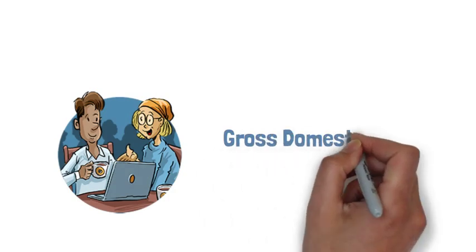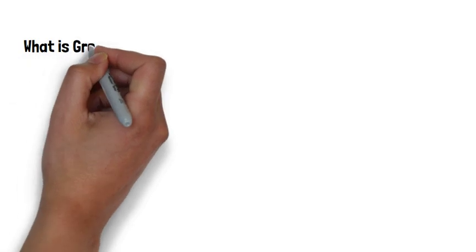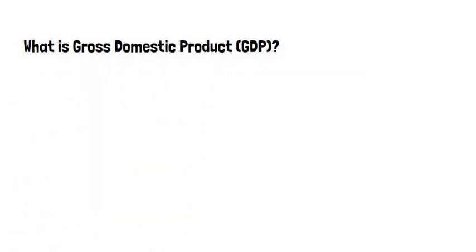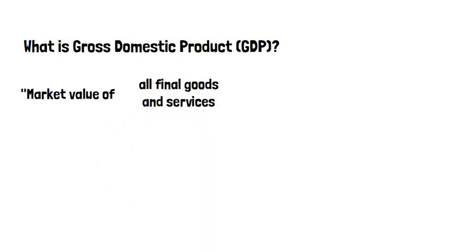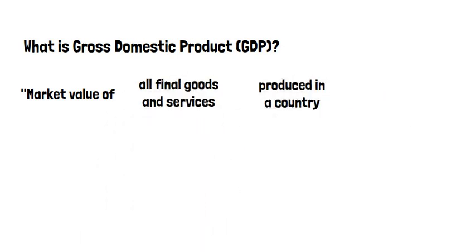Gross Domestic Product, or GDP, is a measure of the level of economic activity in a country. It is defined as the market value of all final goods and services produced within a country in a given period of time.